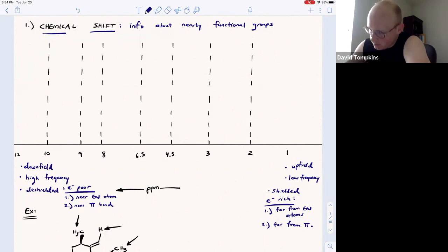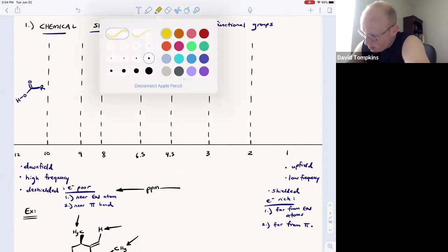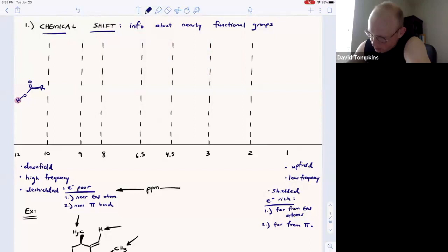A proton that is very deshielded, perhaps the most of anything you'll see in introductory organic, is that of a carboxylic acid. This hydrogen here is bound to an electronegative oxygen, is nearby a second electronegative oxygen, and it is near a pi system. Carboxylic acids generally show up around 12 or so.